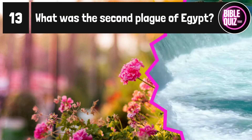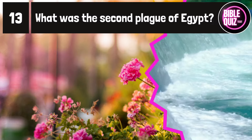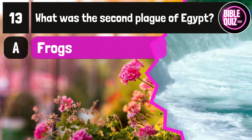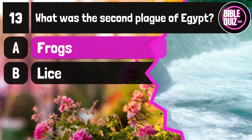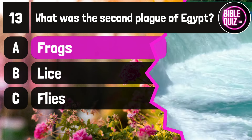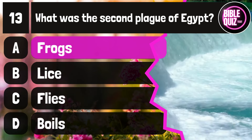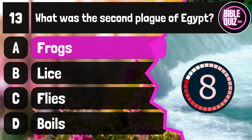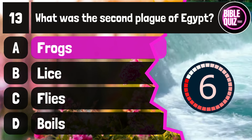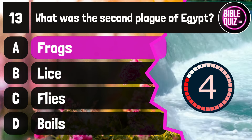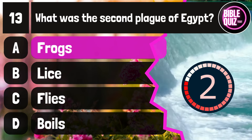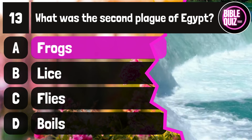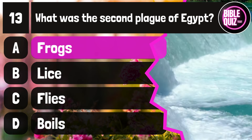Question number 13. What was the second plague of Egypt? Option A: Frogs. Option B: Lice. Option C: Flies. Option D: Boils. Time to think. The answer is option A: Frogs.